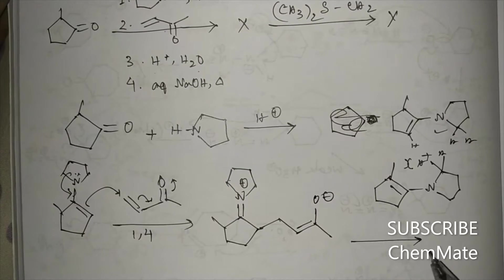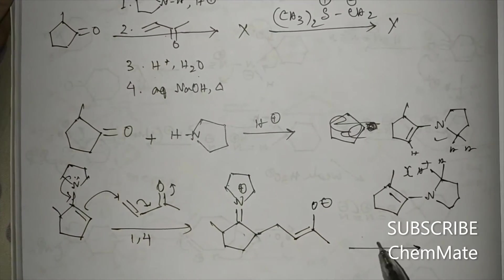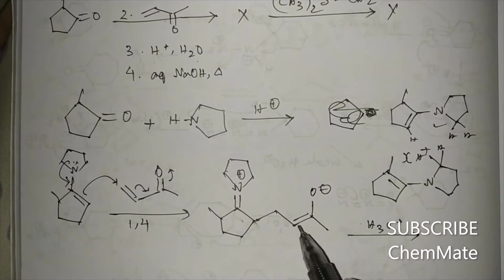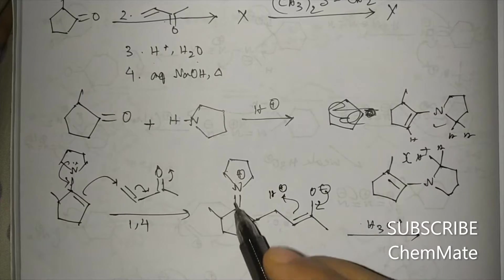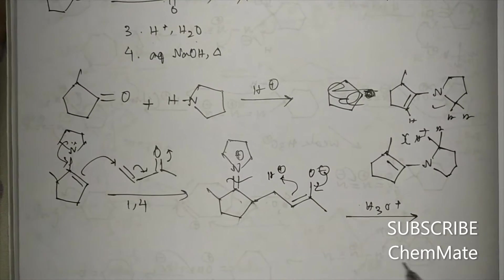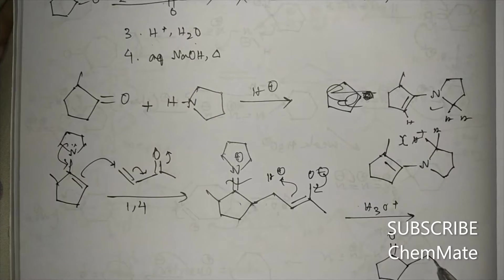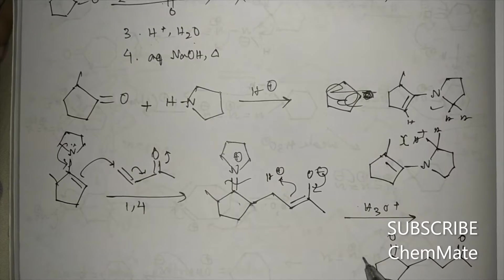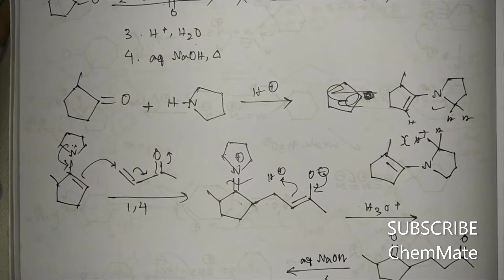After the Michael addition product is formed, acidification with H3O+ causes protonation and hydrolysis of the C-N bond back to a ketone, giving the diketone product.